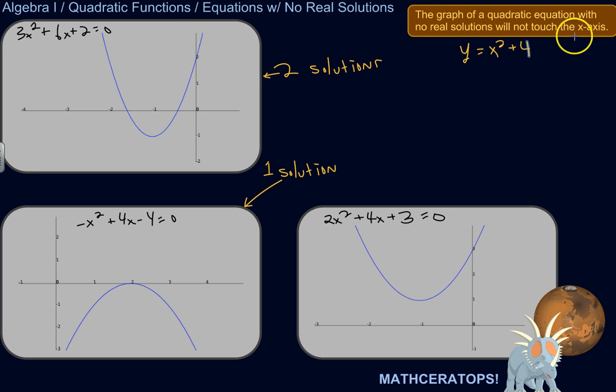So the form would be ax squared plus bx plus c. My a is 1, my b is gone, and I have a c of 4, right? So this counts.